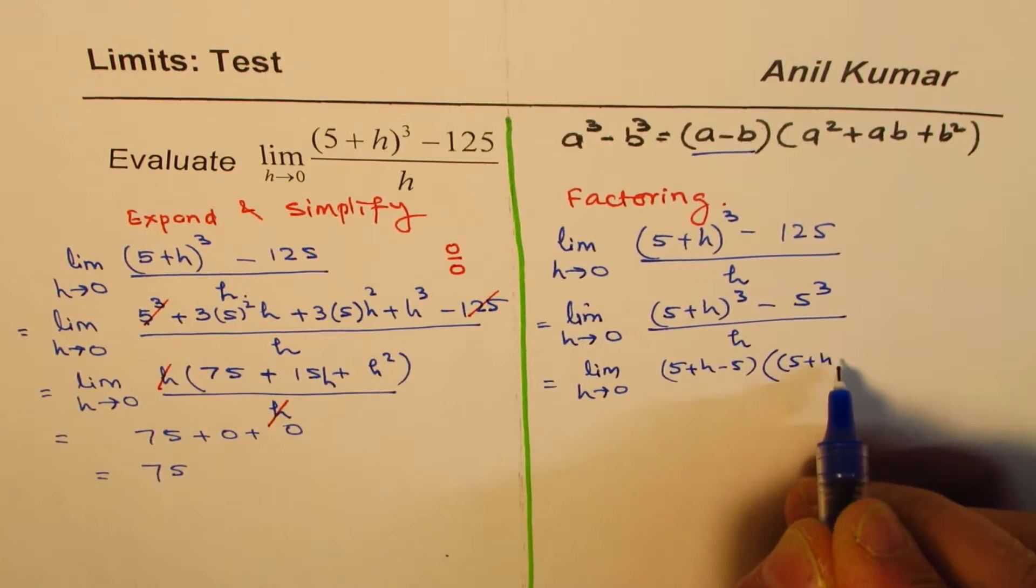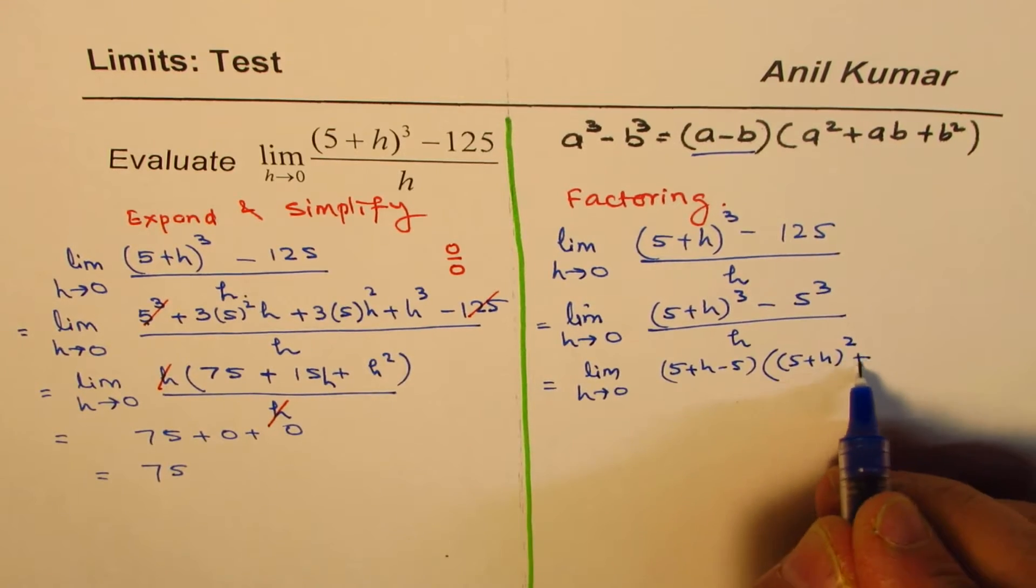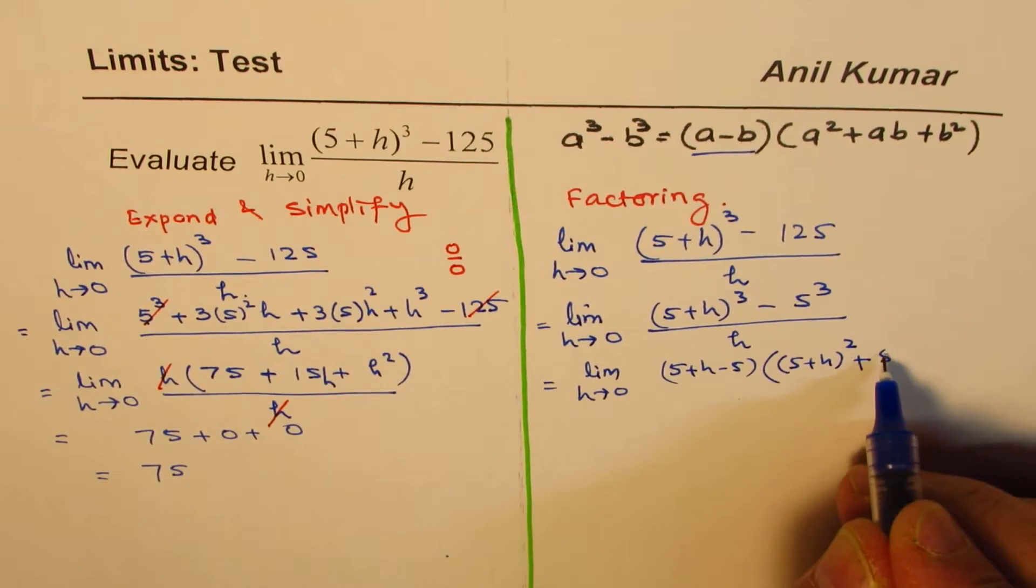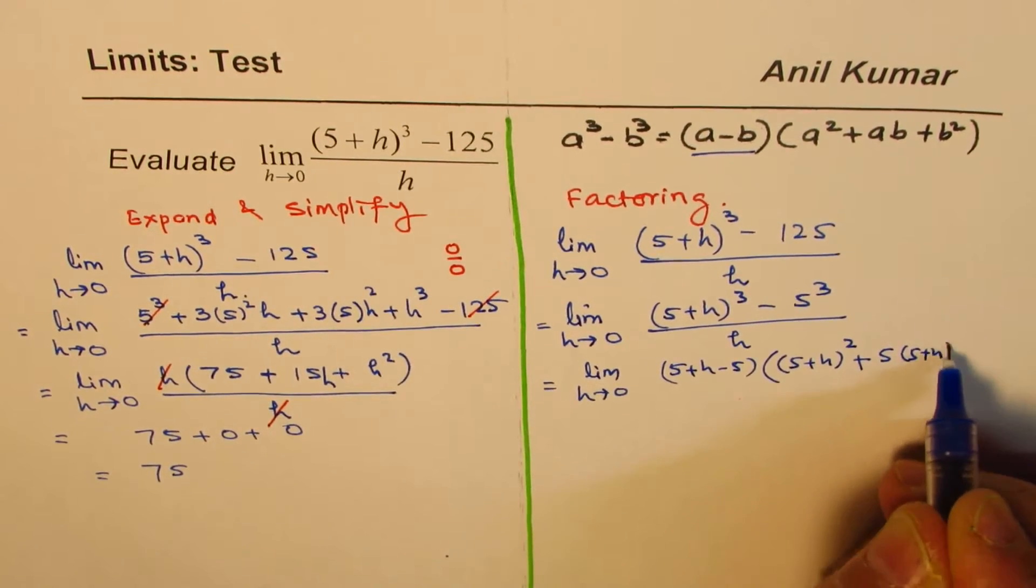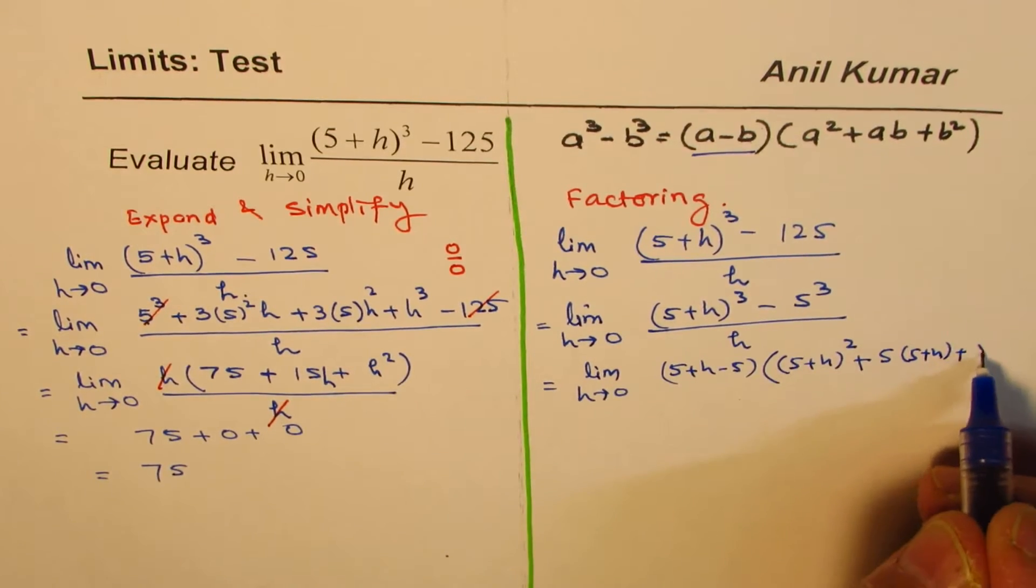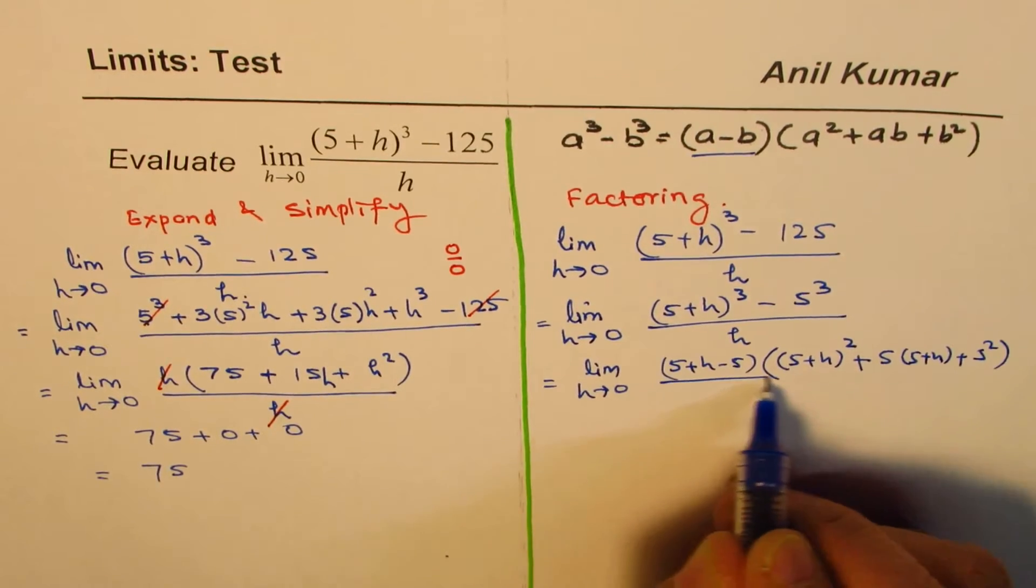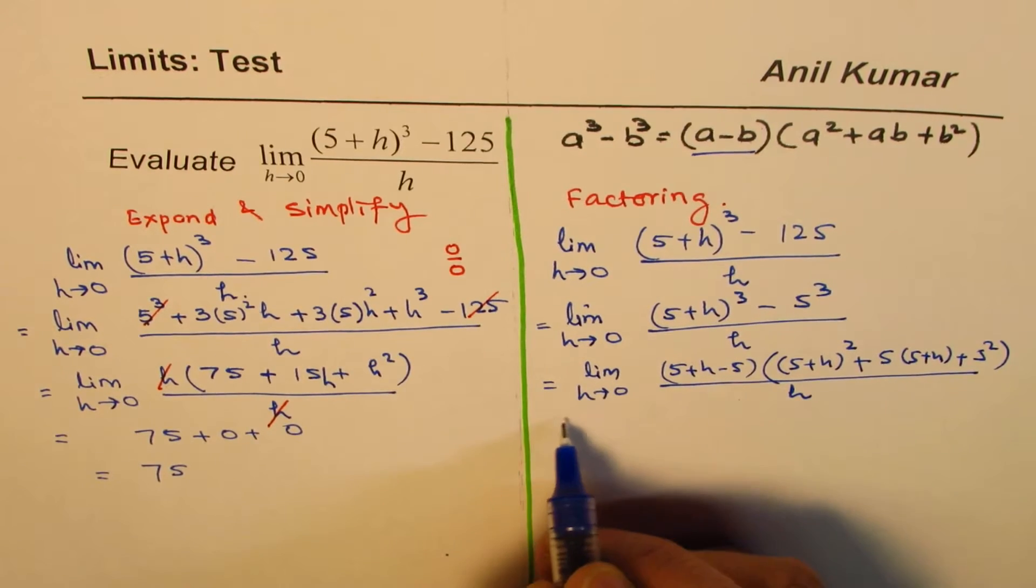That means 5 plus h whole square plus multiplication of these two, 5 times 5 plus h plus square of this, which is 5 square, right? Divided by h.